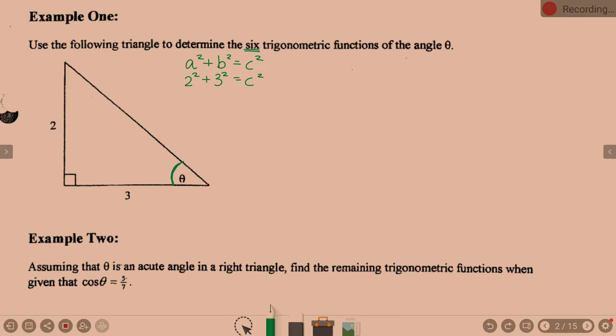Two squared plus three squared. Those are our legs. Equal our hypotenuse squared. So my hypotenuse here is going to be square root of 13.